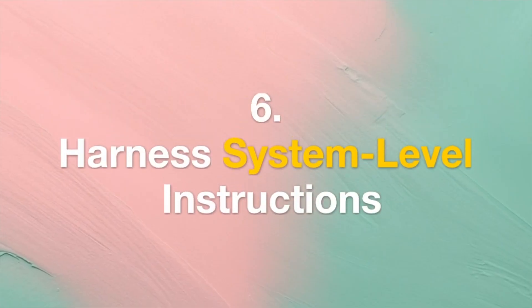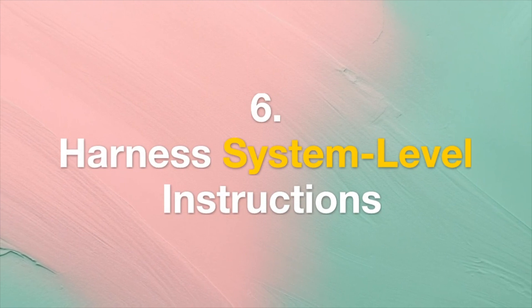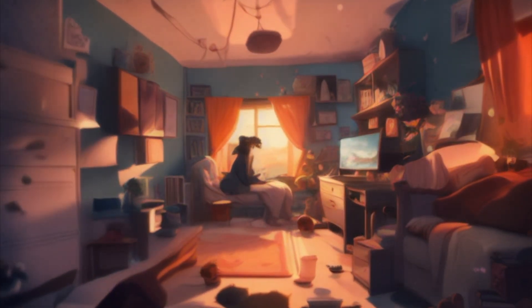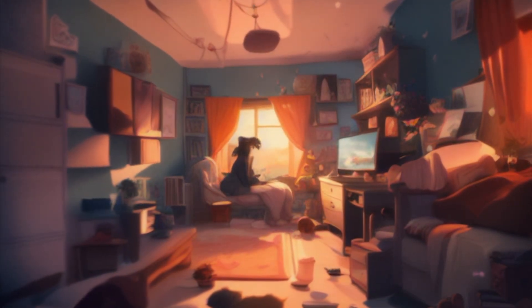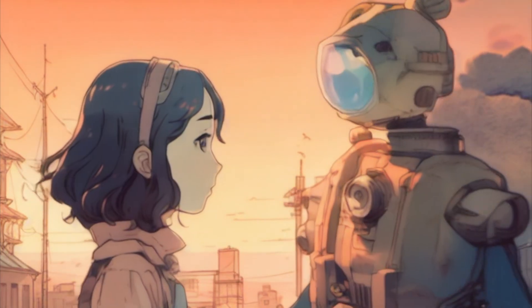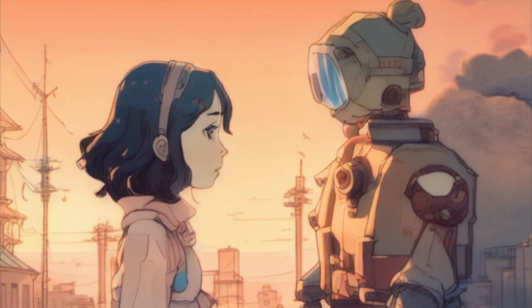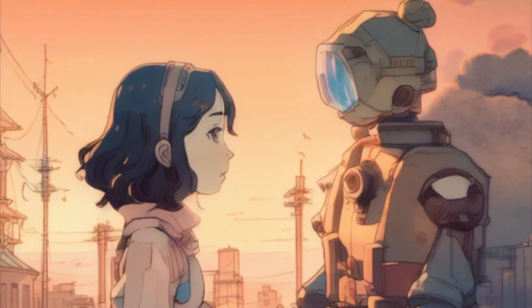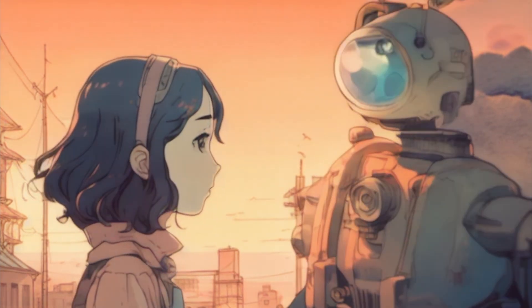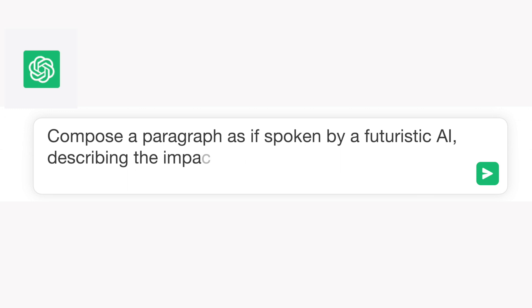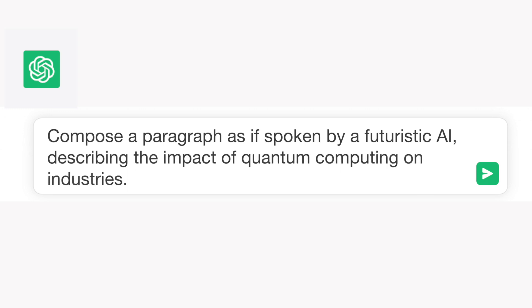Tip 6: Harness System-Level Instructions. Employ system-level instructions at the start of your prompt to guide ChatGPT's behavior. Mold the conversation by specifying the style or perspective you desire. Example: "Compose a paragraph as if spoken by a futuristic AI, describing the impact of quantum computing on industries."